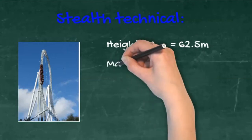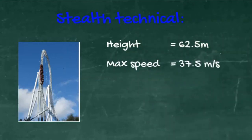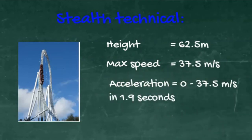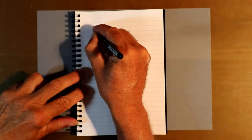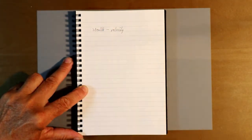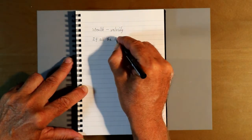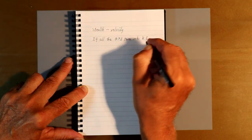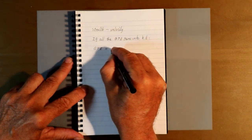Looking at the technical specifications: Stealth rises to a height of 62.5 metres, it has a maximum speed of 37.5 metres per second, accelerates from 0 to 37.5 in 1.9 seconds, g of 4.5. Let's just check these claims, starting with the speed. We are assuming that all the gravitational potential energy converts to kinetic energy, with no losses anywhere else.